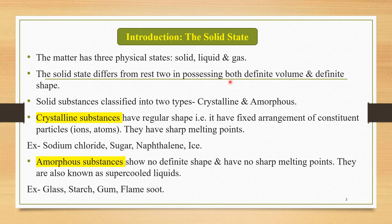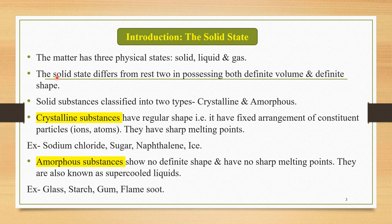In the first part of this chapter, we study the simple introduction of crystal structure, looking towards the solid state. Matter has three physical states: solid, liquid, and gas. The solid state differs from the other two in possessing both definite volume and definite shape, which makes it easily distinguishable from the rest.